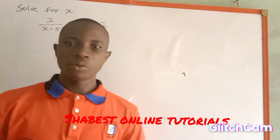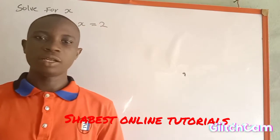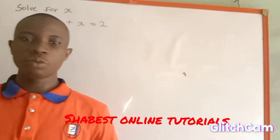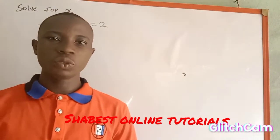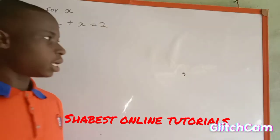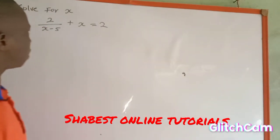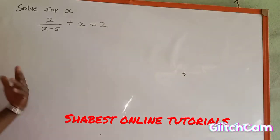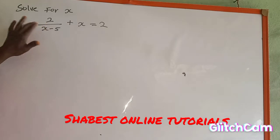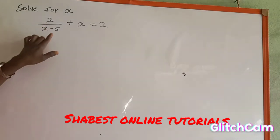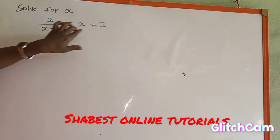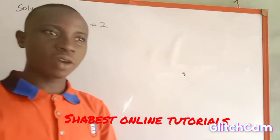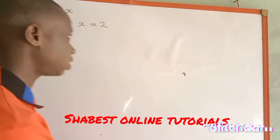Hello viewers, welcome once again to my channel. In today's tutorial we are going to provide a solution to the question on the board. The question says we should solve for the value of s: 2 over s minus 5 plus s equals 2.